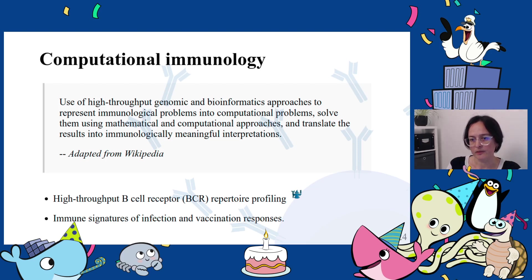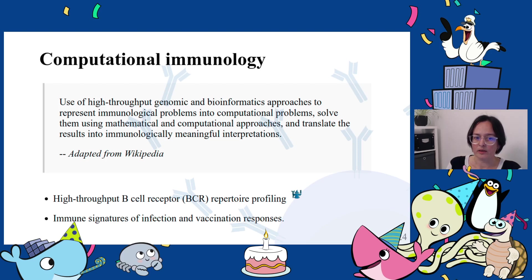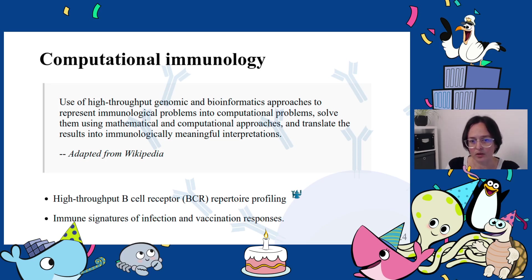What is computational immunology? Computational immunology is the use of high-throughput genomic and bioinformatics approaches to represent immunological problems into computational problems, solve them using mathematical and computational approaches, and translate the results into immunologically meaningful interpretations. In our case, it means we combine big data analysis and immunology domain expertise. Our interests include developing new computational methods and applying these to study human immune responses in two main areas: high-throughput B cell receptor repertoire profiling and detection of immune signatures of human infection and vaccination responses.